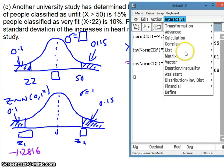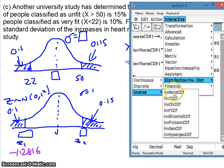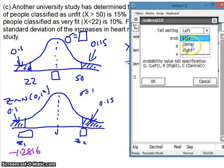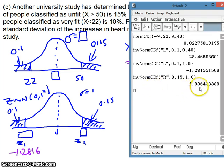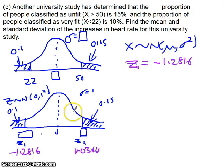Our second Z value can be calculated by working out an inverse normal distribution. This time we'll do a right tail setting, and it's 0.15. Again, it defaults to standard normal, so we don't need to change anything there, and it's 1.0364. So I've got my Z1 value minus 1.2816, and my Z2 value is 1.0364.